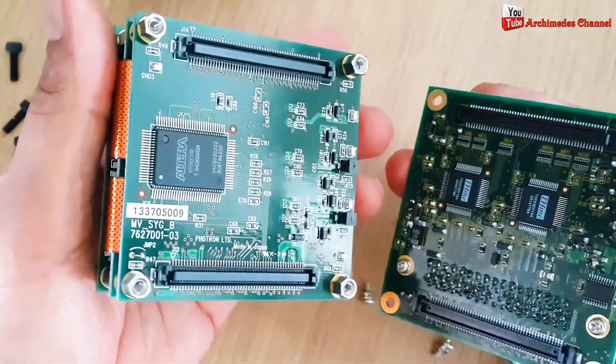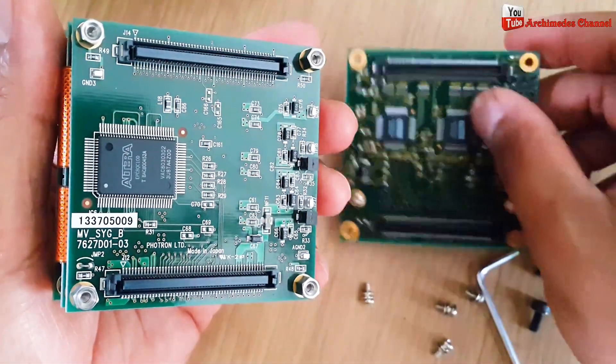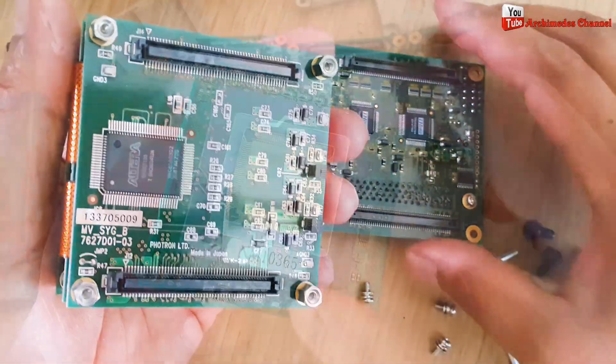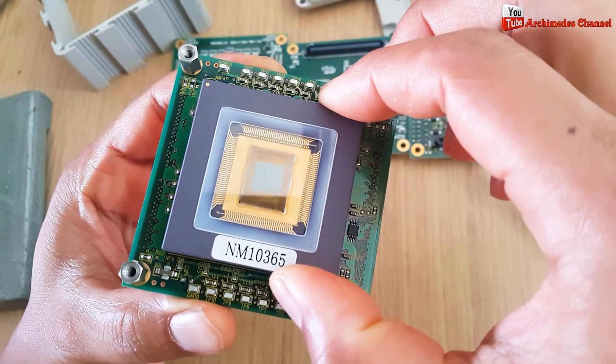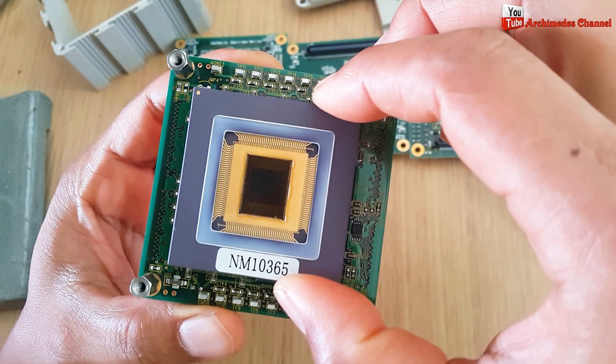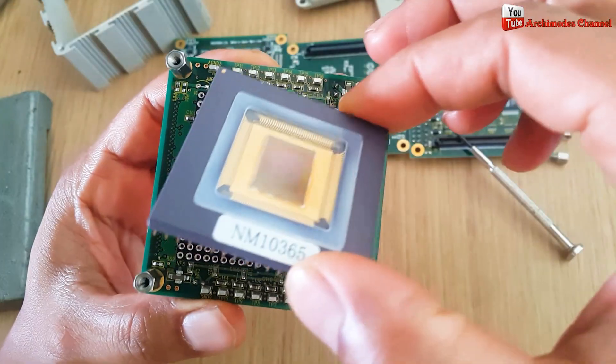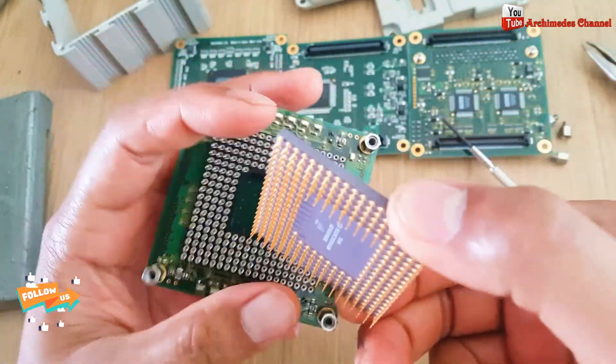Recovering gold from old electronic components involves a process called e-waste recycling. This involves disassembling electronic devices and extracting valuable materials such as gold, copper and other metals for reuse.